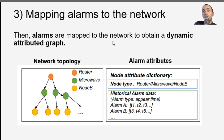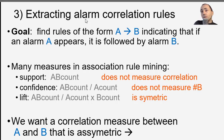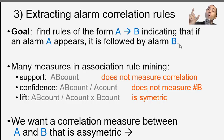After obtaining the topology, we map the alarms onto it to get the dynamic attributed graph — it looks a little like a tree, with alarms and timestamps for each device at each node. From this, we want to find rules of the form 'A implies B': if alarm A appears, it will likely be followed by alarm B. We are never 100% sure, but we want to find strong correlation rules between alarms A and B.